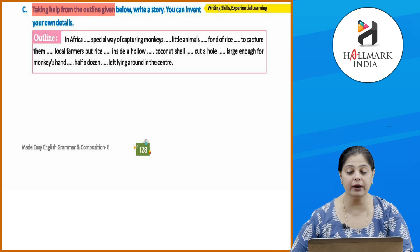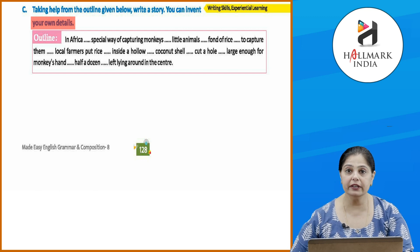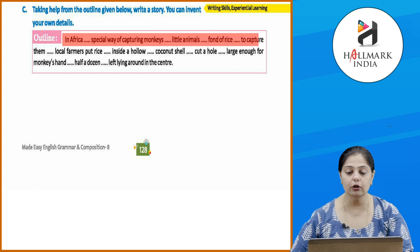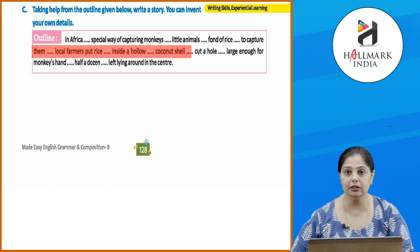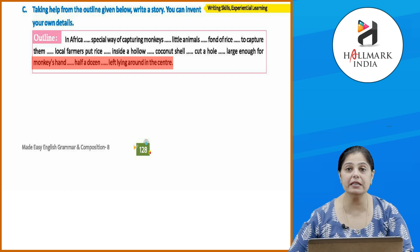Third, taking help from the outline given below, write a story — you have the freedom to invent your own details. Outline: In Africa there are special ways of capturing monkeys. These little animals are fond of rice. To capture them, local farmers put rice inside a hollow coconut shell with a hole cut just large enough for the monkey's hand. Half a dozen of these are left lying around in the center. Now quickly write the stories based on all these outlines.